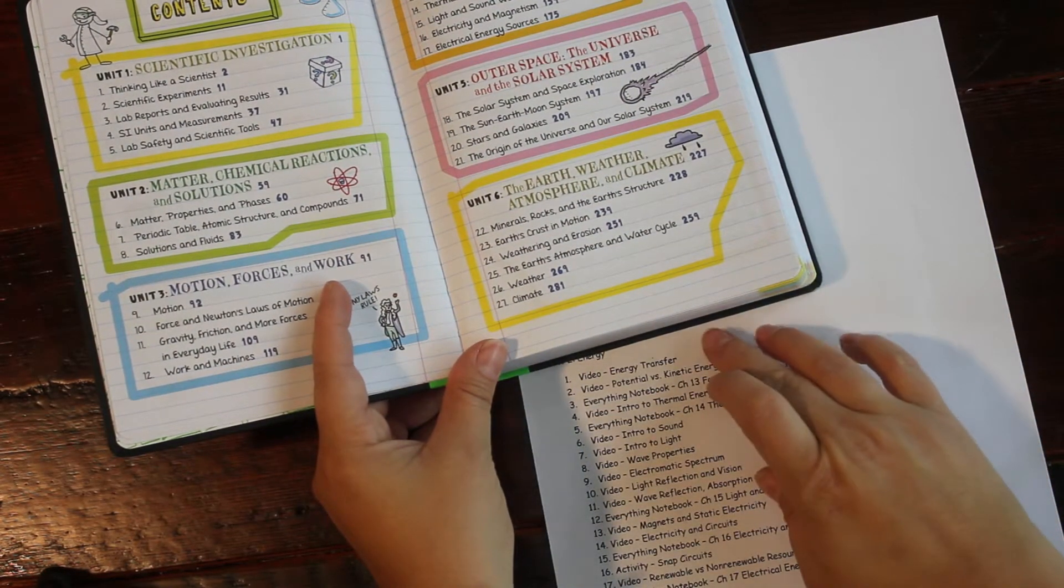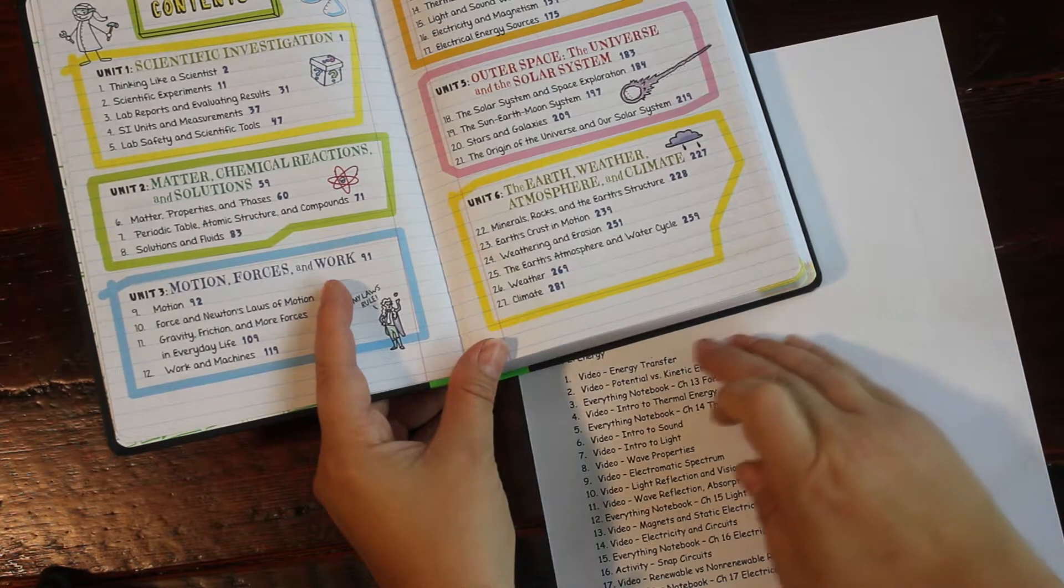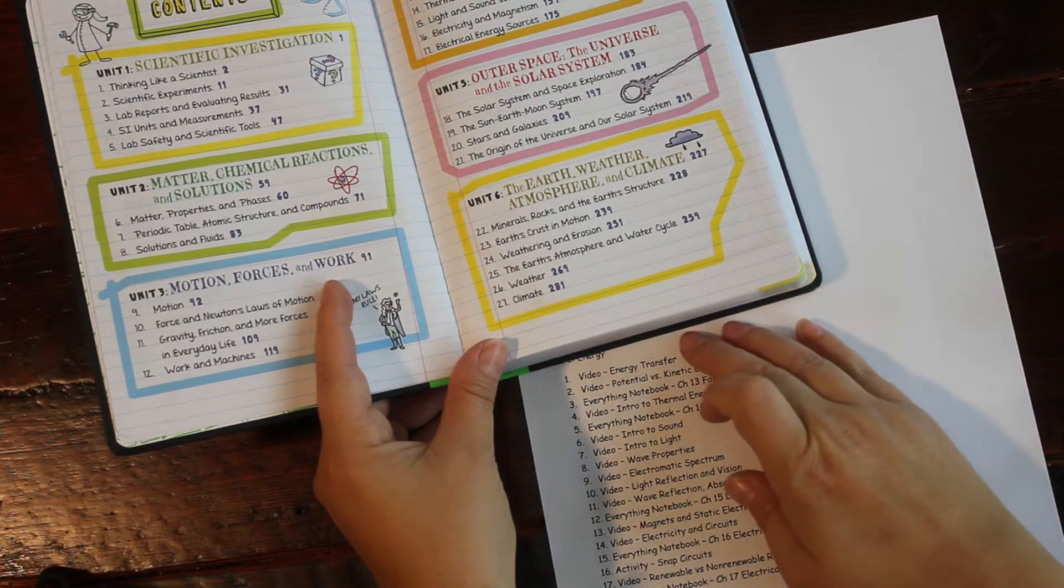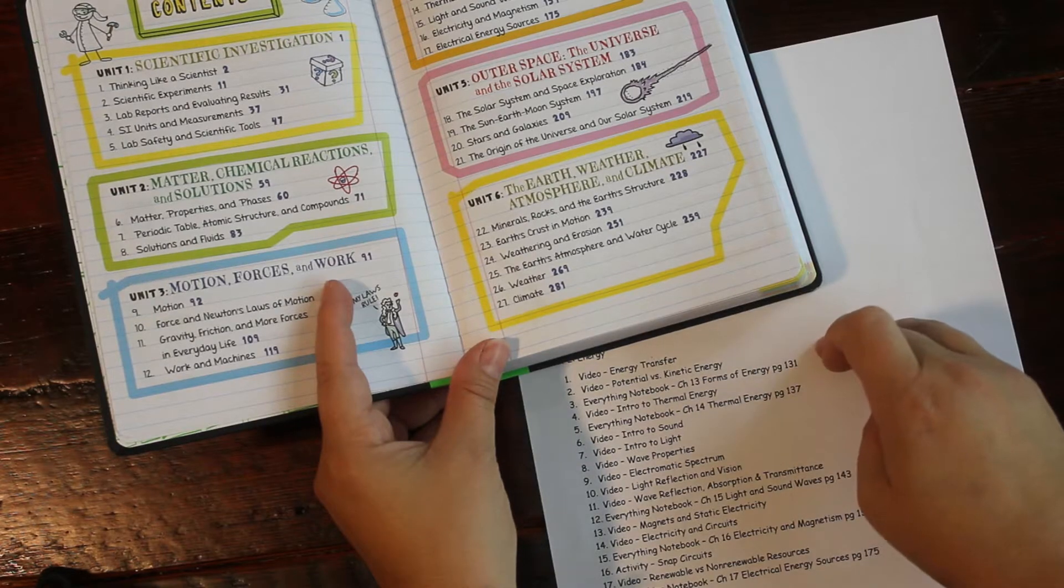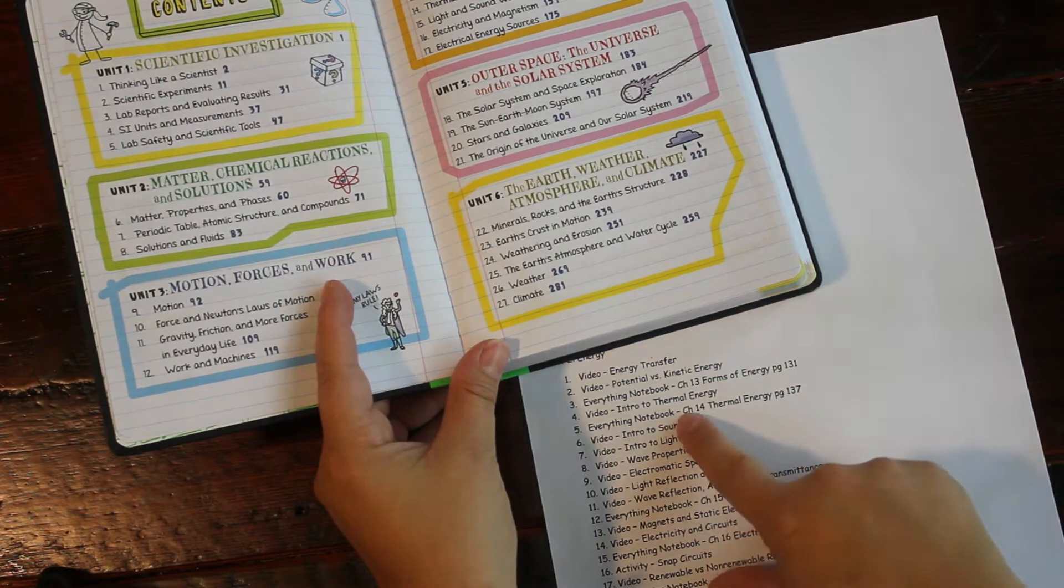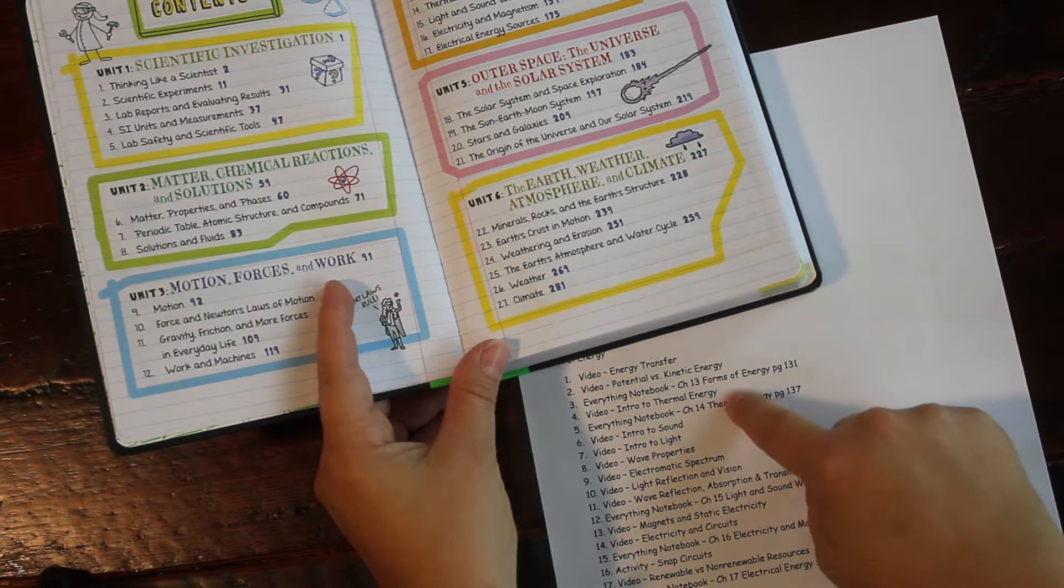We basically there's like a video for the lower level and then a video for the higher level. And so we'll watch the lower level and then the higher level and then we'll do the everything notebook. Sometimes there's only one video that corresponds. So we'll just do that one.